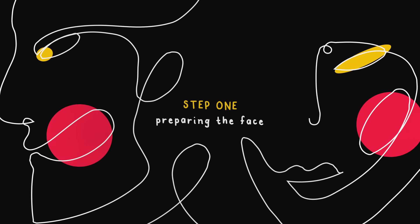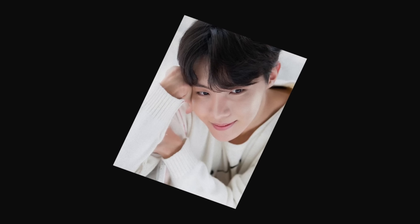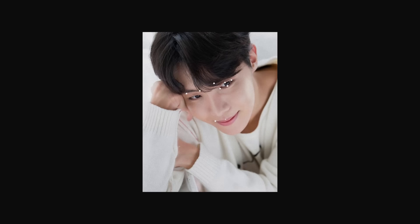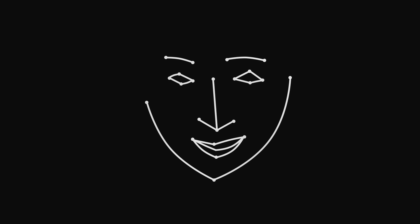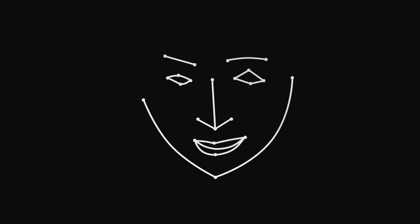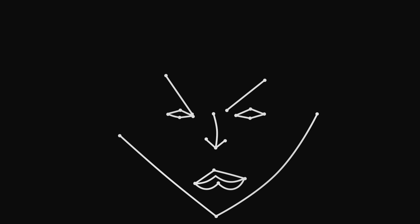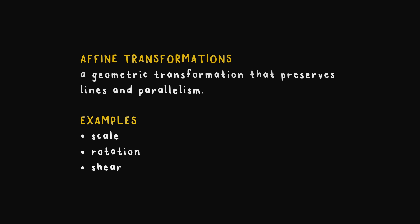Once a machine detects a face, what happens next? The machine now needs to analyze key facial features, done in two steps. The first step is all about preparing the face so it's as easy to work with as possible — minimizing the effect of things like perspective and face orientation. By identifying standard landmarks on a face like eyes, nose bridge, and jawline, the machine can transform the image to look like it's facing straight ahead. This brings every image to a sort of baseline to simplify comparisons. The machine only uses affine transformations — essentially scale, rotation, and shear — to preserve points and parallel lines.